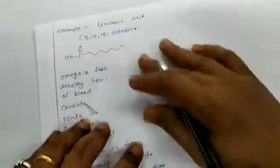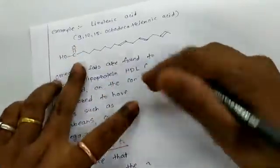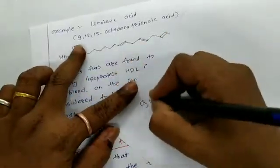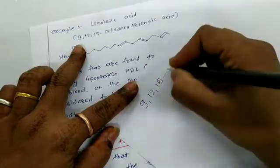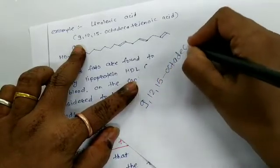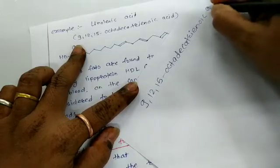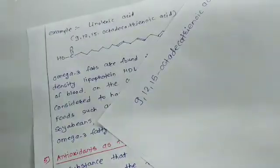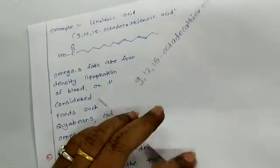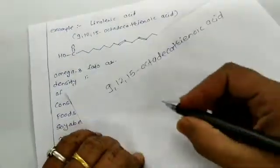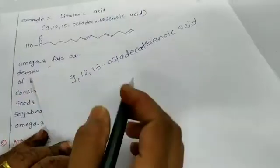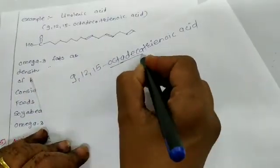What is the name? Octadeca. IUPAC names are in the name of the structure. How do you know the structure of the IUPAC name for linoleic acid? 9, 12, 15, octadeca-trienoic acid. That is the structure.